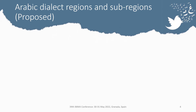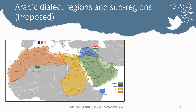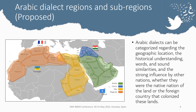Arabic dialects can be classified by countries or by cities, but here I propose a map I created to classify Arabic dialects based on regions and sub-regions, using geographical location, historical aspects, word and sound similarities, and the strong influence of other nations — whether the native peoples of those lands before Arab expansion or foreign countries that colonized those lands throughout history.